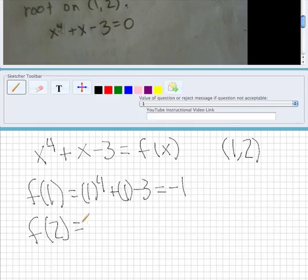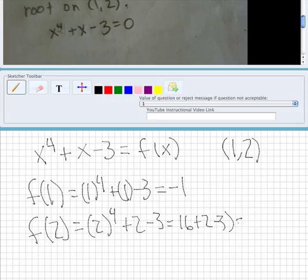And then if we plug in 2, 2 to the 4th plus 2 minus 3 is going to equal 16 plus 2 minus 3. So that's 18 minus 3 is 15.